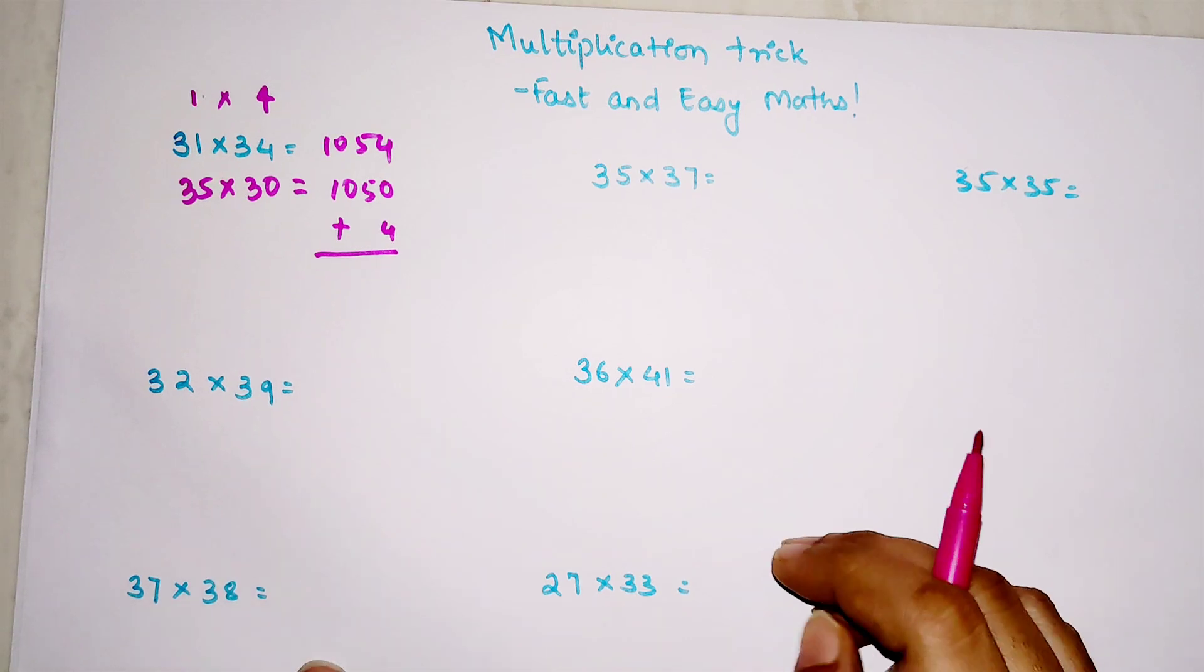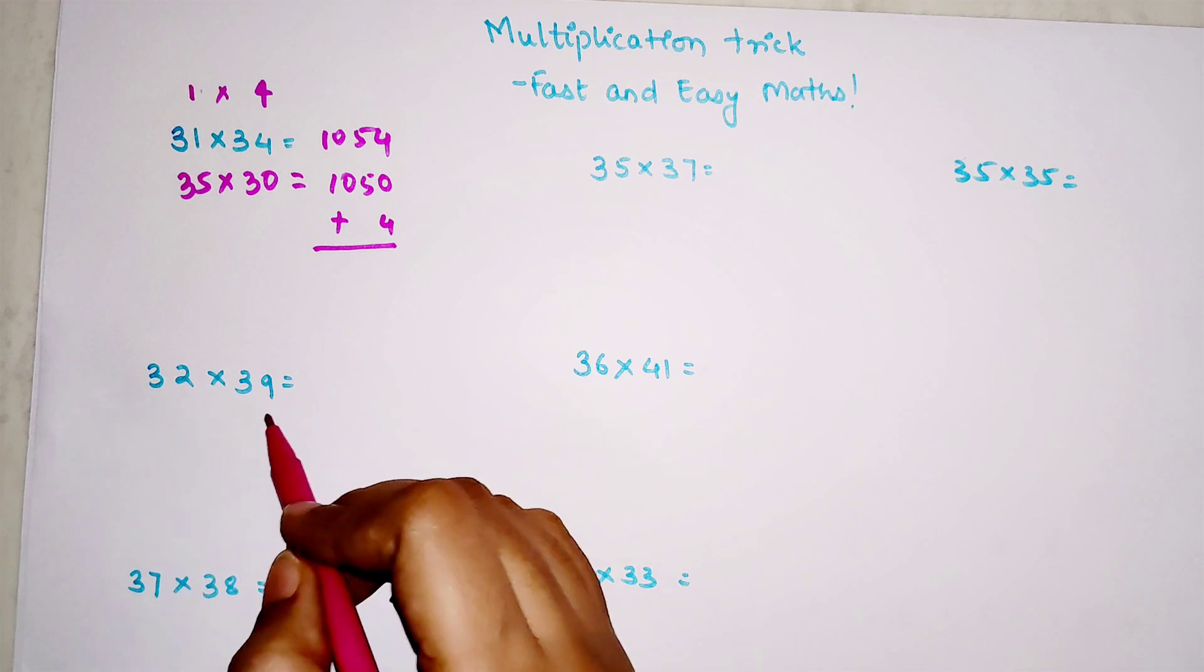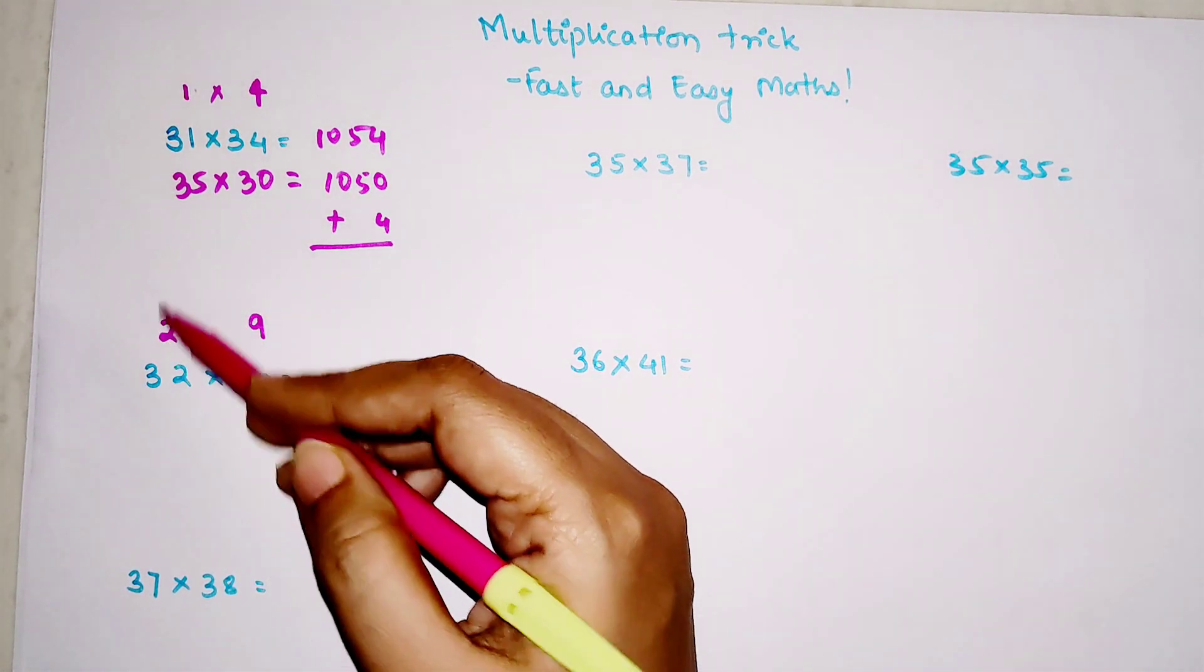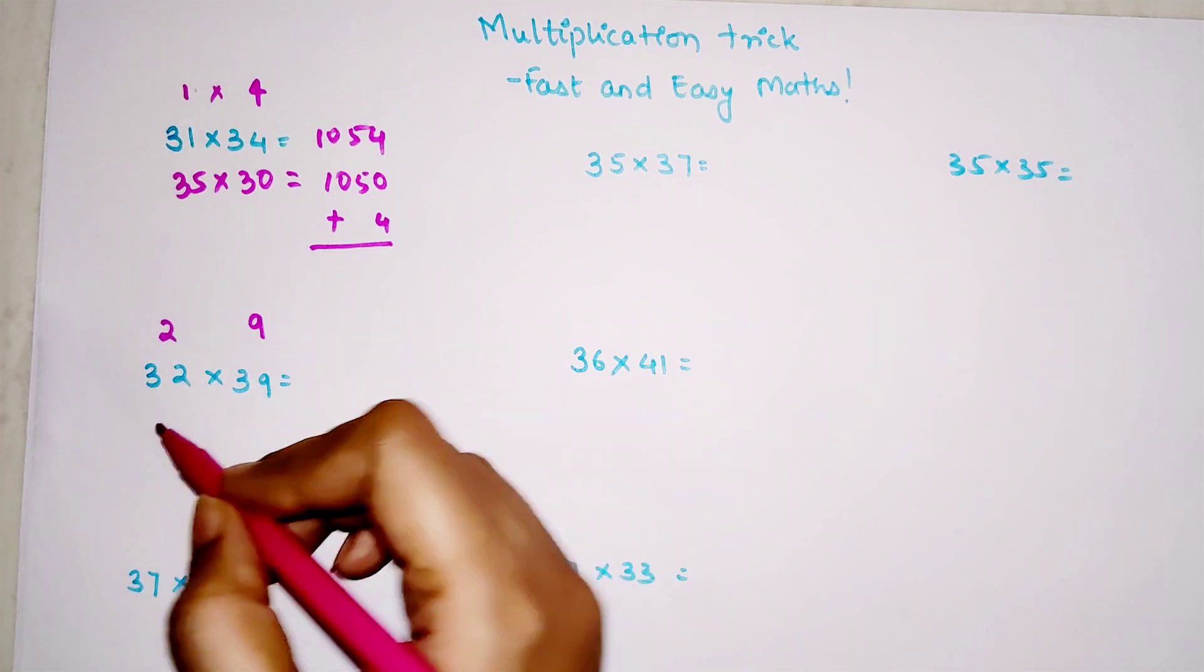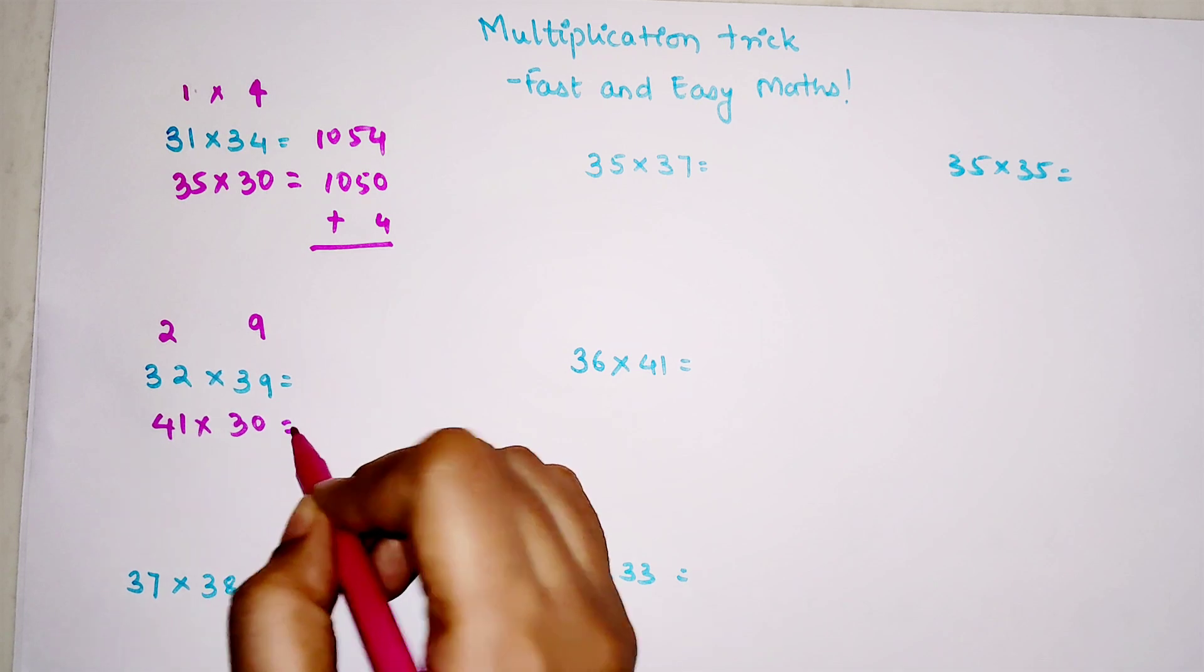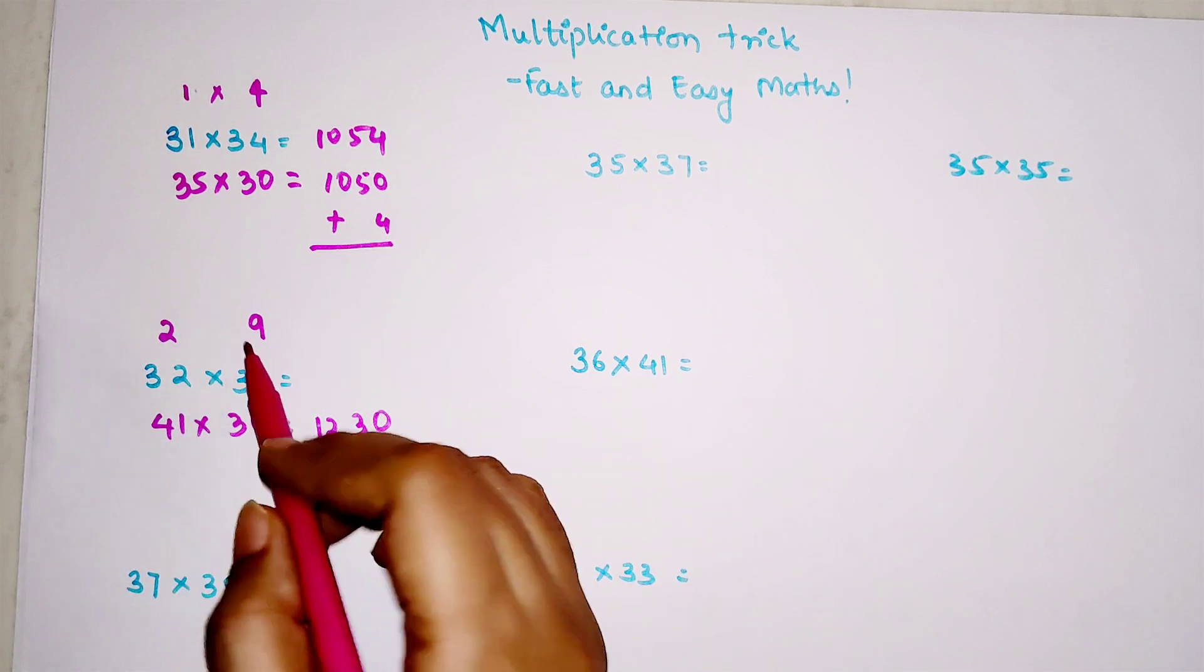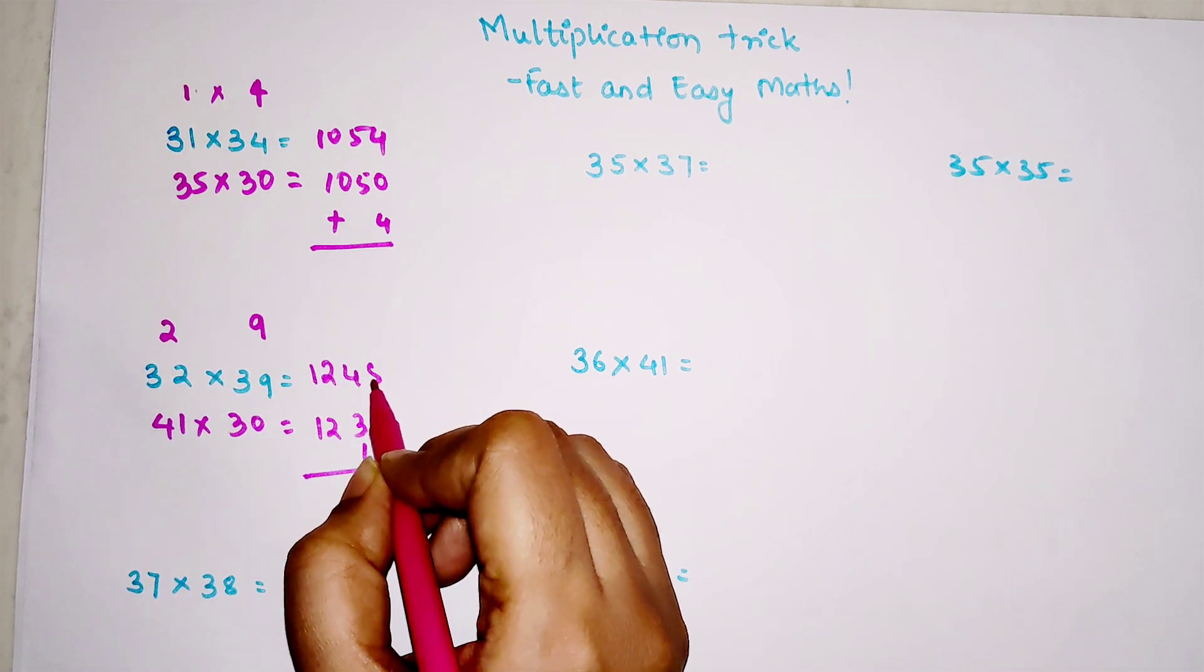Now let's do the next one: 32×39. This is 2 away from 30 and this is 9 digits away from 30. Please remember you're not adding vertically, you're adding diagonally. So 32 plus 9 or 39 plus 2 gets you 41, and you multiply by 30. Your answer is 1230, and the product of 2 and 9 is 18. So when you add them, your answer is 1248.